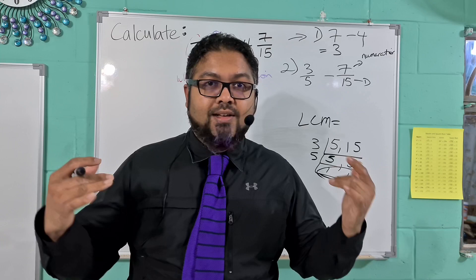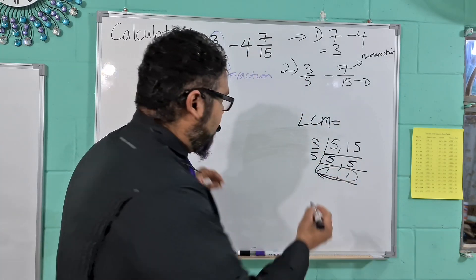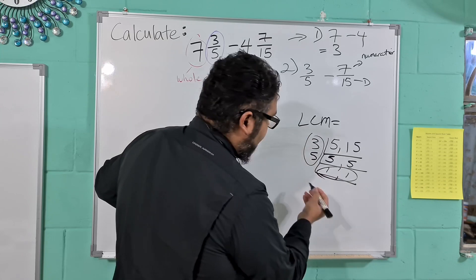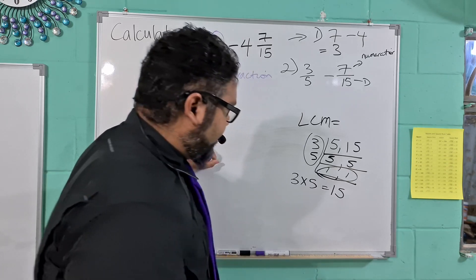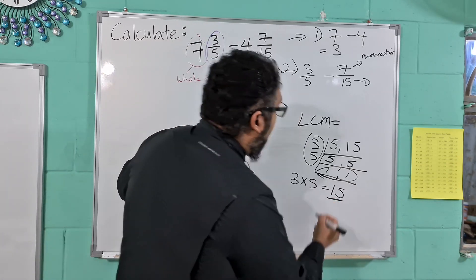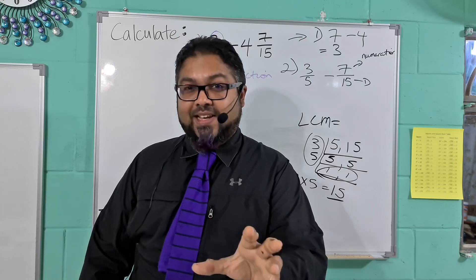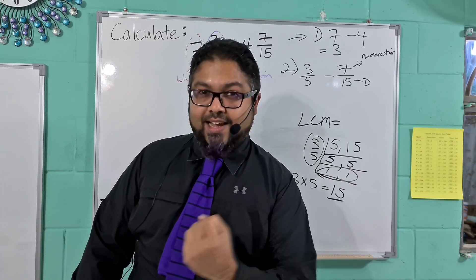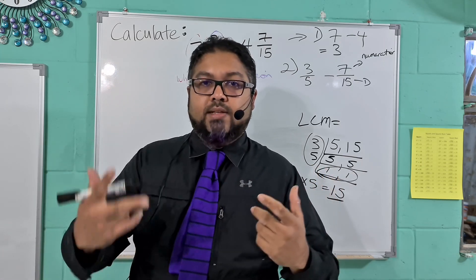So in order to get the Lowest Common Multiple, we'll just multiply these two numbers. 3 multiplied by 5 equals 15. So here, what we will do is, hopefully this is recording and I don't lose the footage again. So I'll stop here and then we'll continue to just finish the question part 2 of the video.